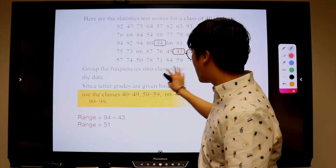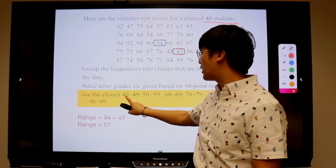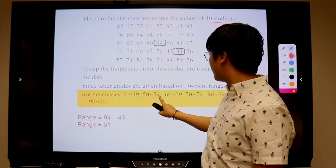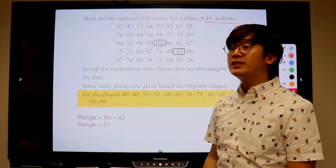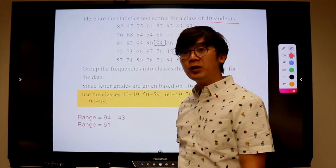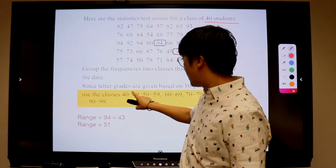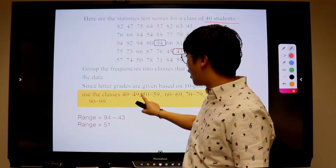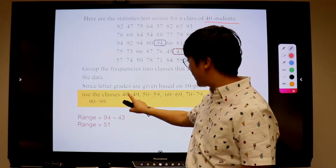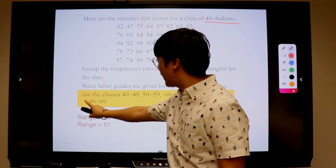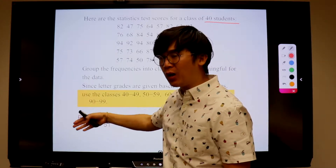This is our classes. We're going to have a group of students who scored between 40 and 49, 50 and 59, 60 and 69, and so on until we have 90 through 99, because the lowest is 43 and will be covered in our first group, and the highest is 94 and it will be covered in our last class.